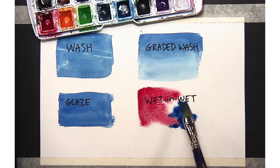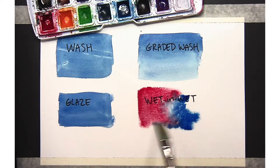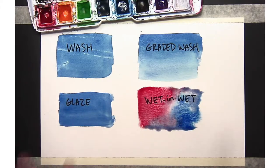So you can even do multiple colors with wet-in-wet. You don't have to stick to one. And then you can always even add in more water and use your brush to kind of move the paint around.